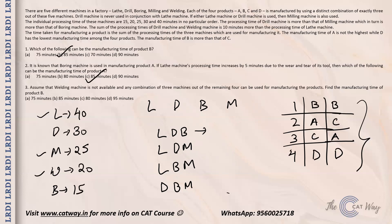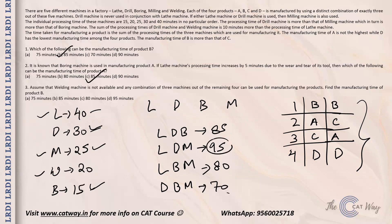Calculating times for each combination: L,D,B = 40+30+15 = 85; L,D,M = 40+30+25 = 95; L,B,M = 40+15+25 = 80; D,B,M = 30+15+25 = 70. Since B has the maximum manufacturing time, B's time is 95 minutes. The correct answer is option D: 95 minutes. This was a pretty straightforward set — thanks for watching!